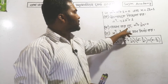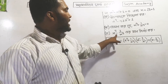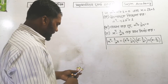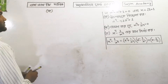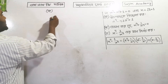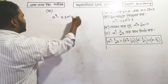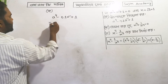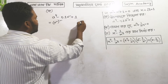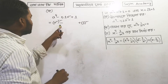Thole cholo amra ek ek ke prashnogulor samadhan dekhini. Ko prashne samadane amadarke utpadok nirnoj kurte hobe. Ara ekhane minus chinho ache, ekhane amra ekhane shutro proof korth dekho.